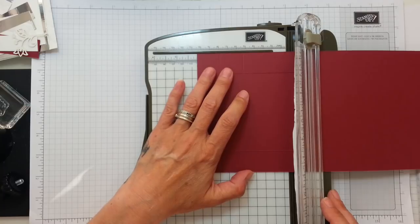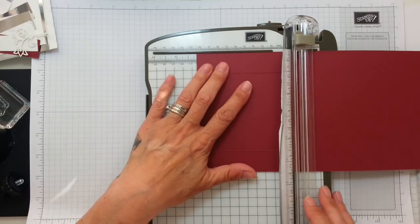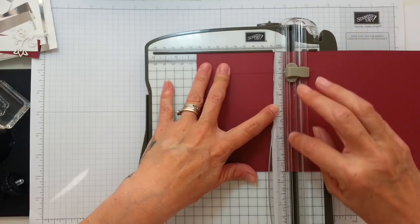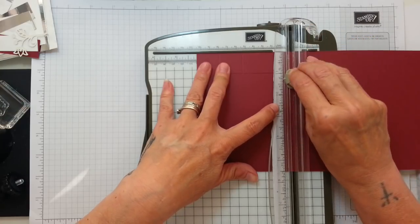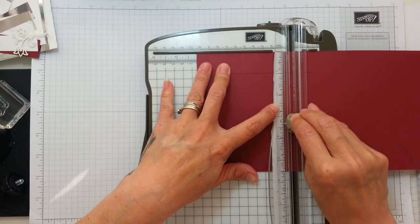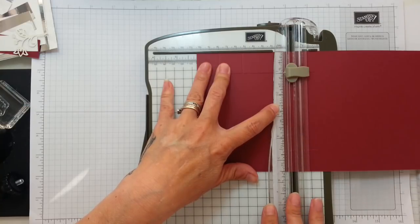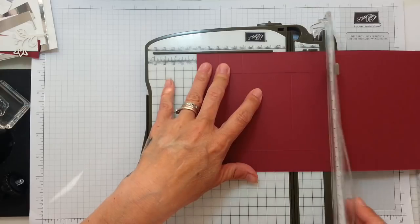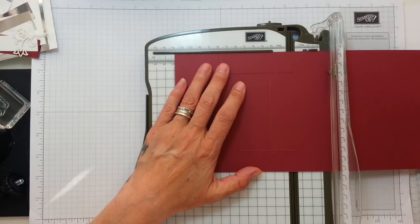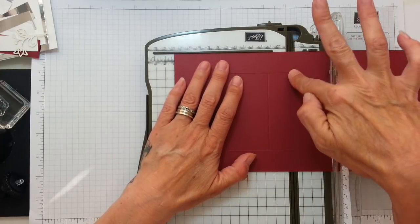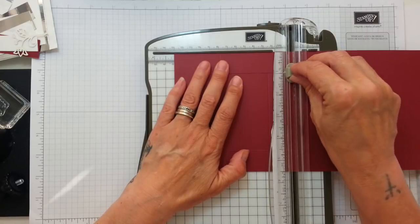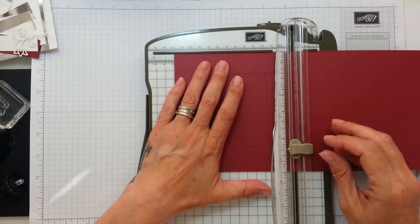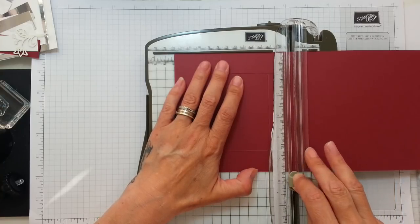Then the next one is four and one eighth. And this time I'm going to score from one down to four and a half. So we're doing it between these cut lines. Yes, I think that's right. And then we're going to go to five and one eighth and cut two of the score lines again. So from one and then from four and a half down to the edge.